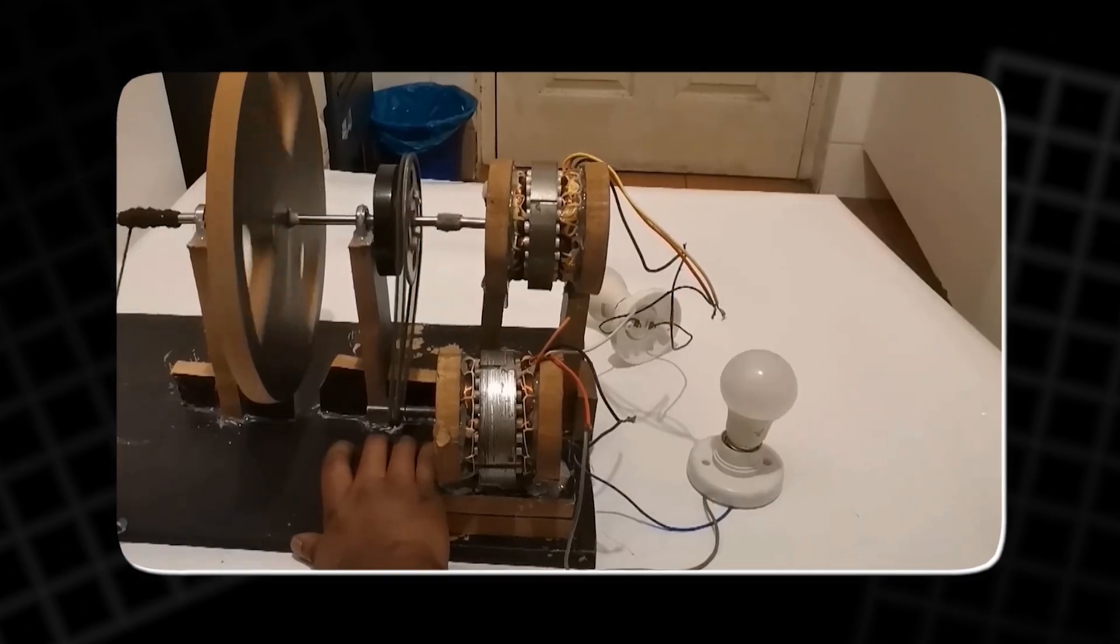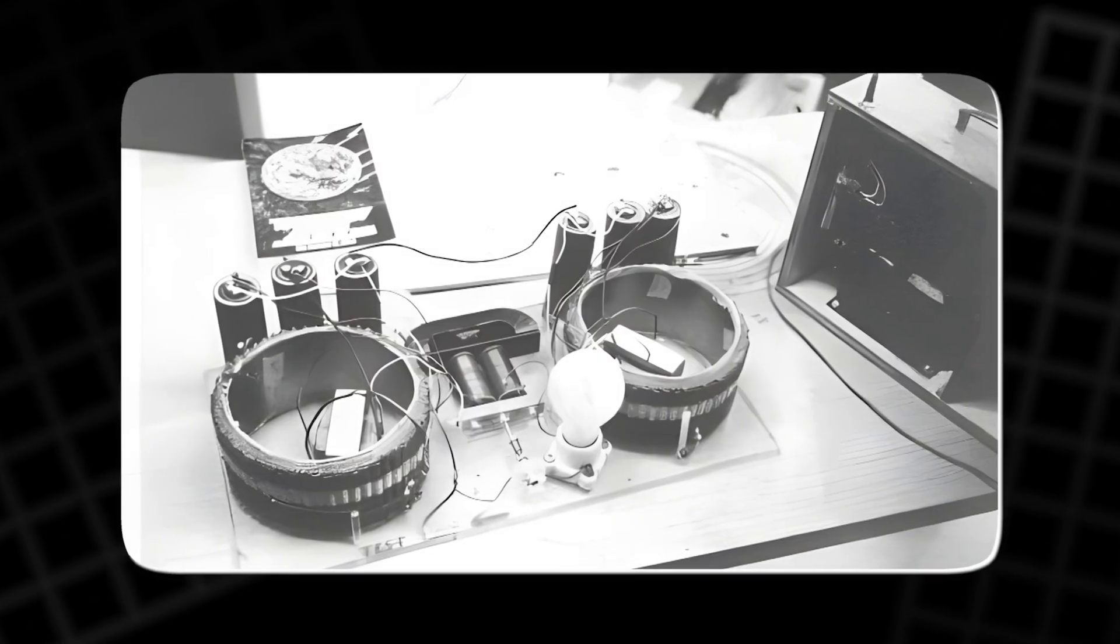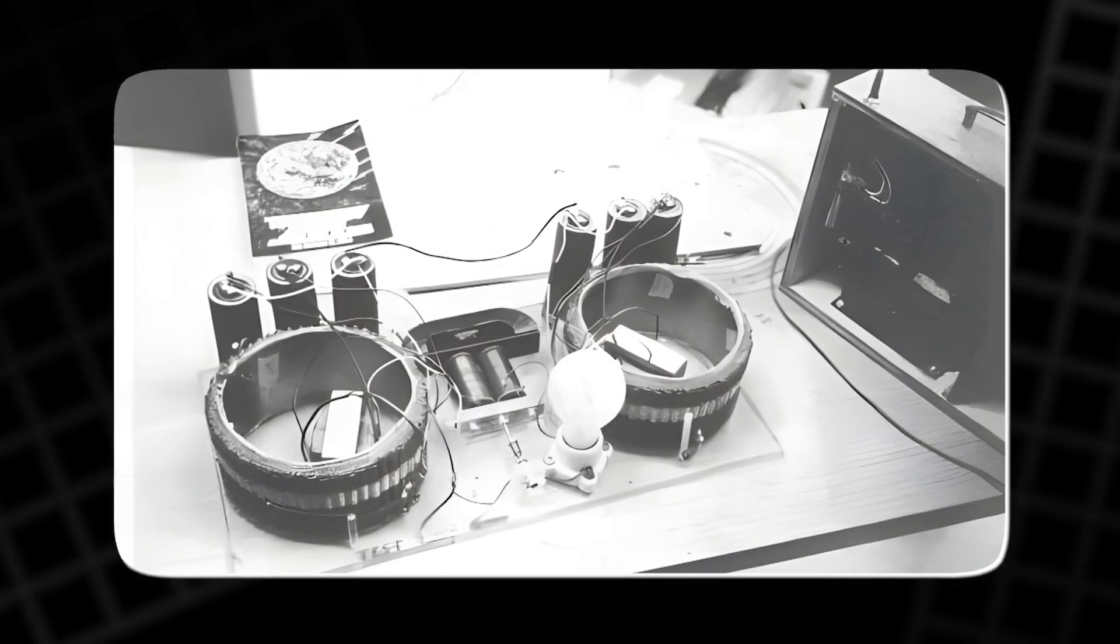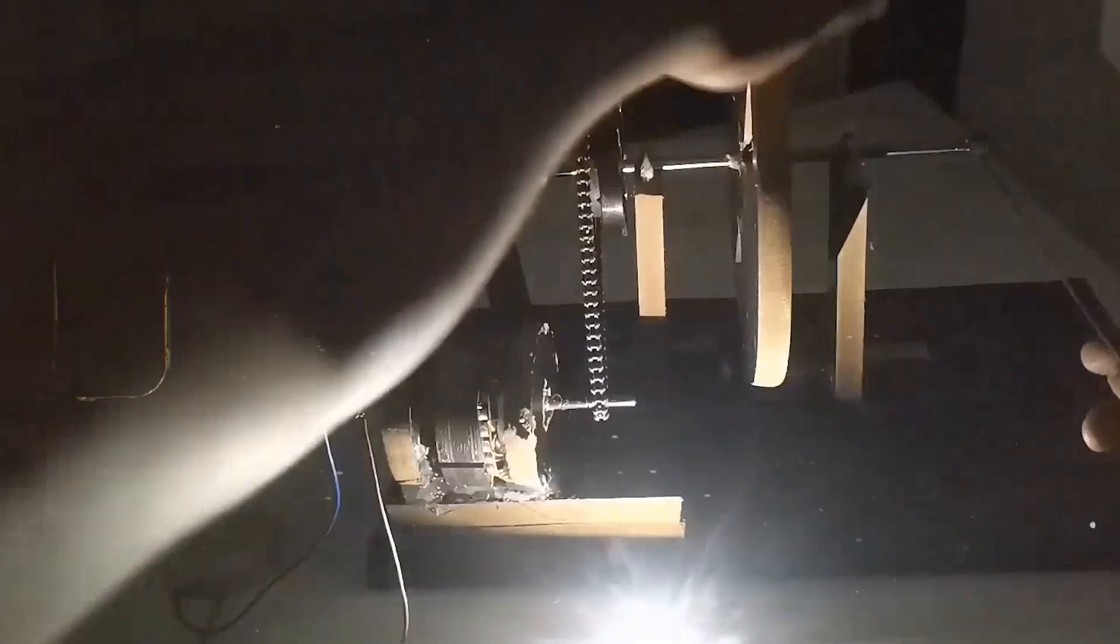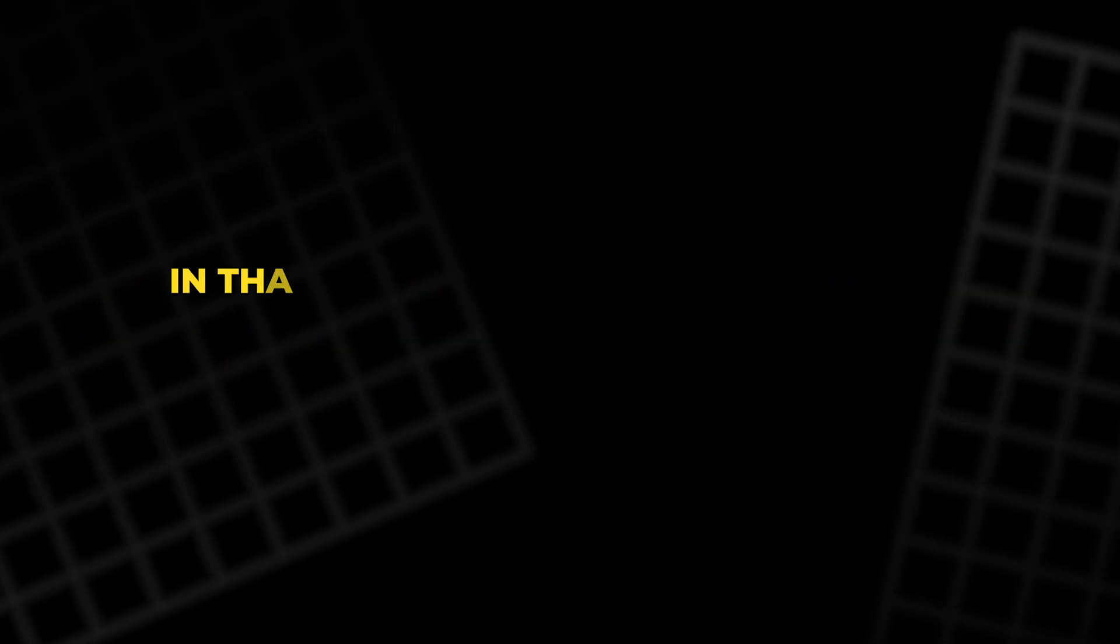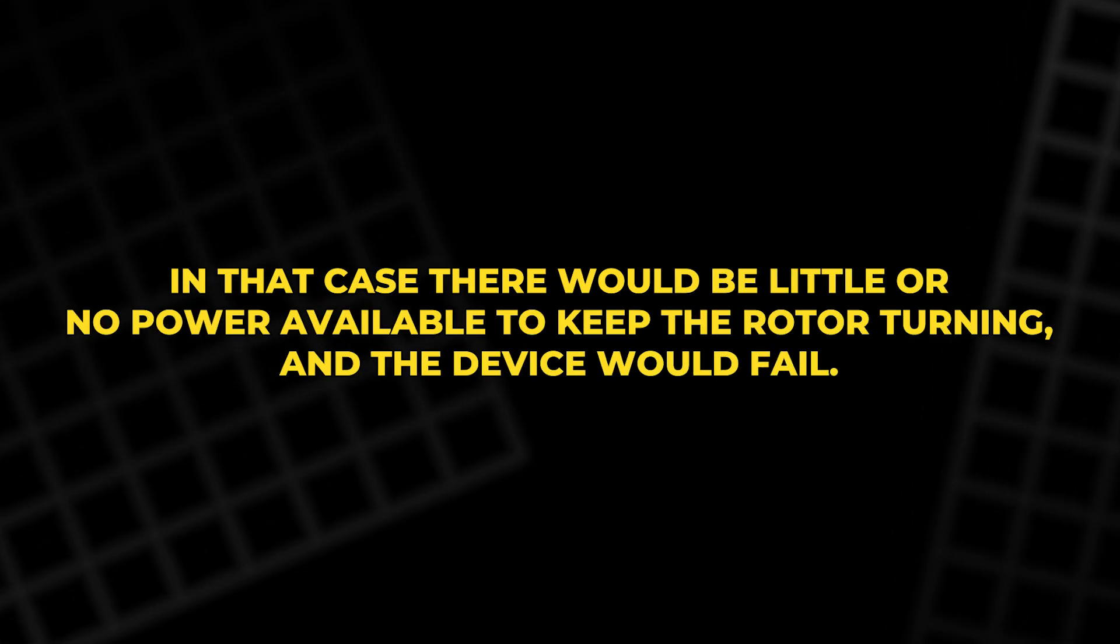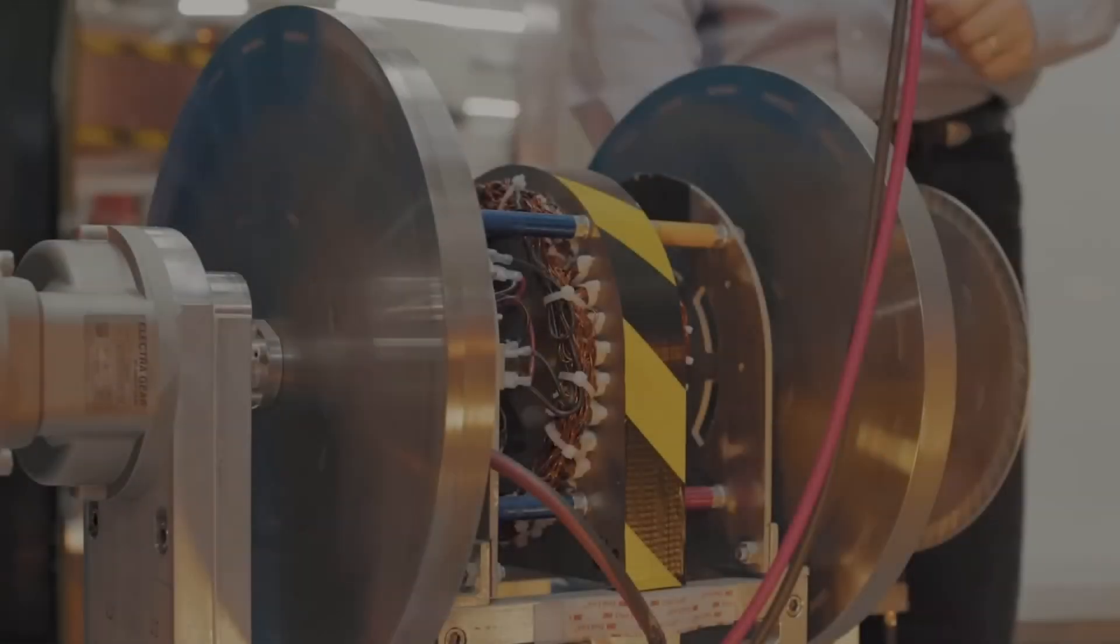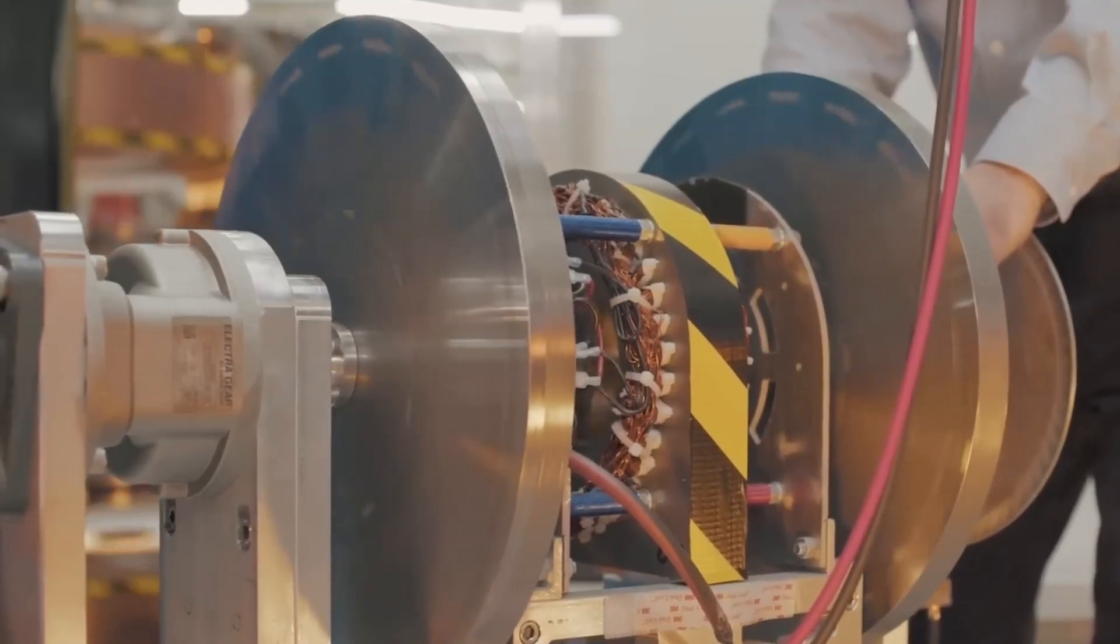He also addresses a subtle problem that arises because of the way energy behaves. Energy naturally tends to spread and escape if it can. If the pulses of energy inside the zero-point generator were allowed to rush straight along the shaft and out through the front, it would bypass the armature and leave the machine too quickly. In that case, there would be little or no power available to keep the rotor turning, and the device would fail. To prevent this, he has added a special round door or disc at the front of the generator.